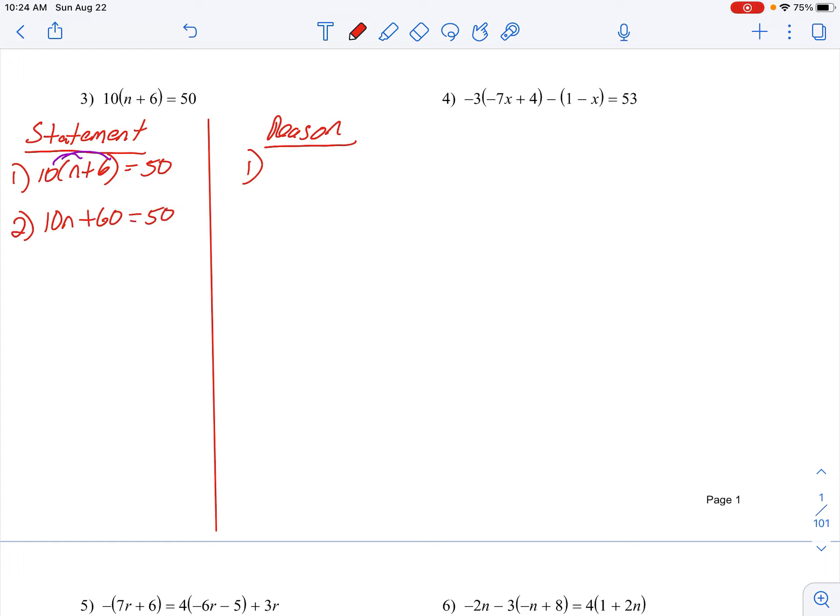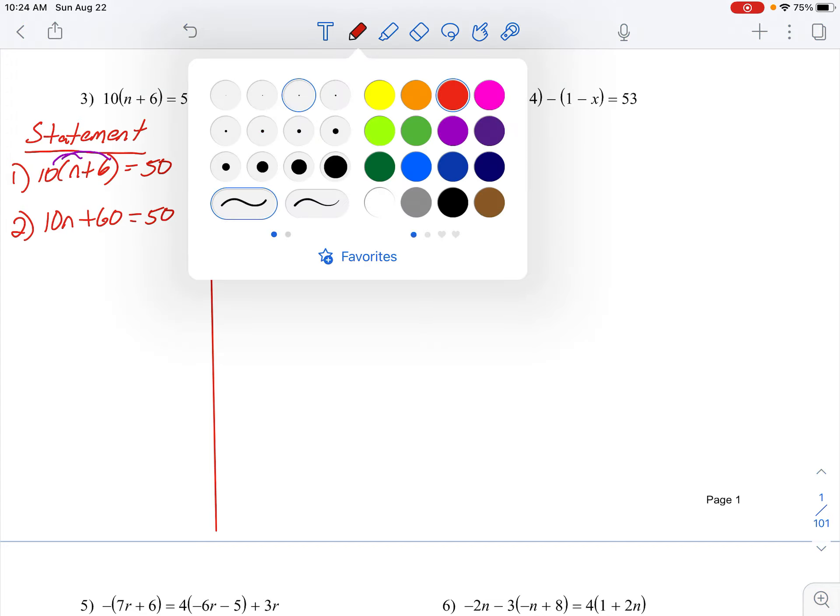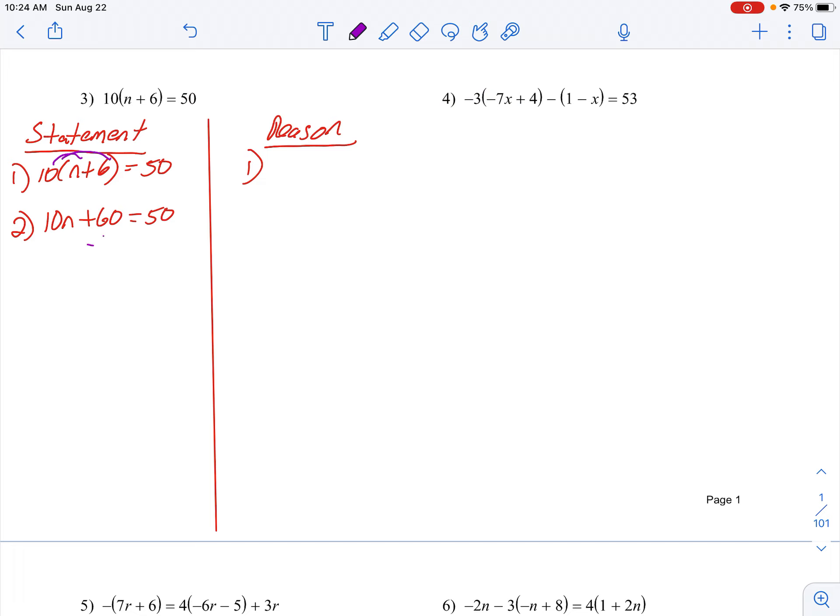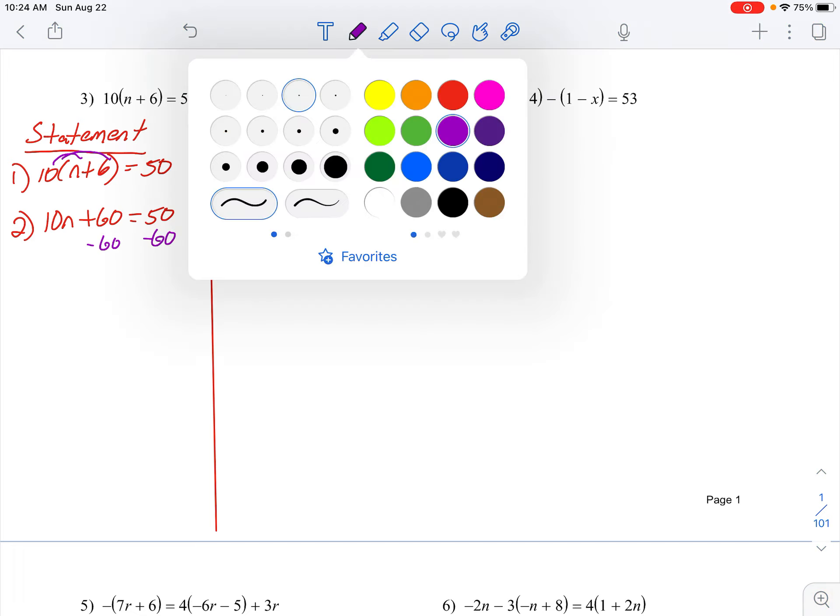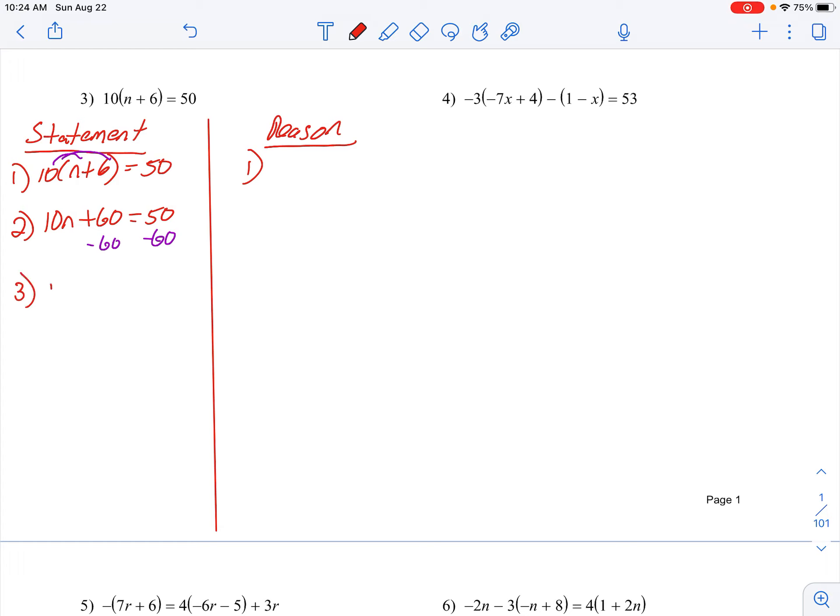And then after this is what we call a two-step equation. All we have to do is subtract 60. And then after that, in step three, all we gotta do is divide by 10.